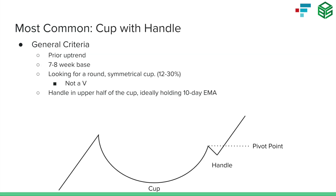There are dozens of patterns, and I'm not going to discuss every one of them — it would take hours to cover all of them, and I don't use all of them. I think it's best to focus on a few patterns you understand deeply rather than trying to play every single strategy. The most common pattern I'll talk about is called the cup with handle. There are some general criteria with the cup and handle that are applicable to a lot of other longer patterns that form through market corrections and bear markets.